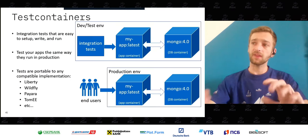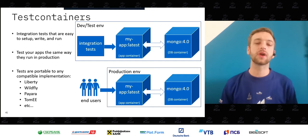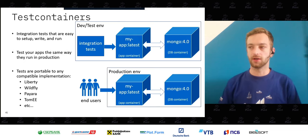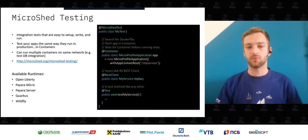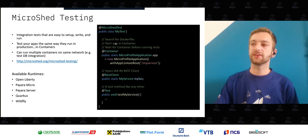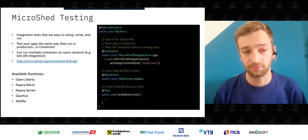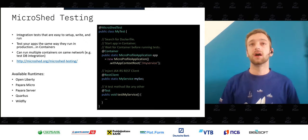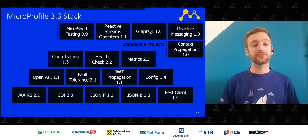Test containers help you replicate your production environment locally using containers. MicroShed Testing is an implementation of this concept. In code, you annotate the class with @MicroShedTest, create an application container, inject your REST client, and write tests just like normal JUnit tests. The great thing is it runs on many different runtimes, making it easily portable.